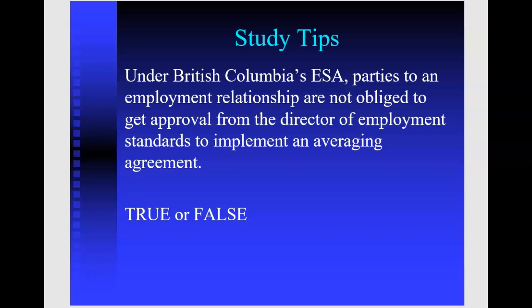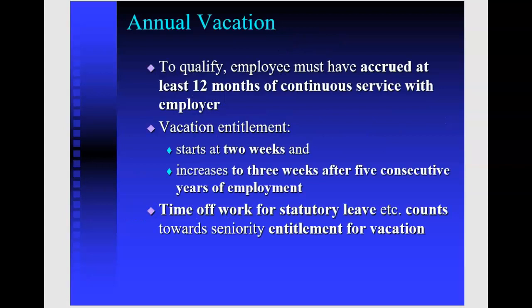True or false question: Under the BC Employment Standards Act, parties to an employment relationship are not obliged to get approval from the Director of Employment Standards to implement an averaging agreement. The answer is true — no approval from the director is needed. That approval requirement applies to varying the standards, and an averaging agreement is not varying the standards but averaging hours of work over one to four weeks to reduce overtime.